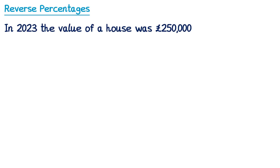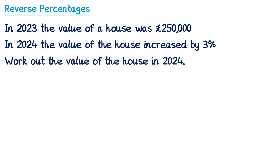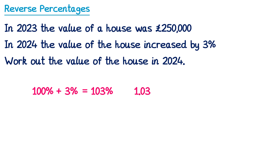We're going to start with a percentage increase question similar to that from the last video. In 2023, the value of a house was £250,000. In 2024, the value of the house increased by 3%, and we need to work out the value of the house in 2024. Since the value increased by 3%, we're going to work out a multiplier for a 3% increase. To do this, we start with 100%, add 3%, which is 103%. We then take 103 and divide it by 100, which gives you 1.03. This is the multiplier for a 3% increase.